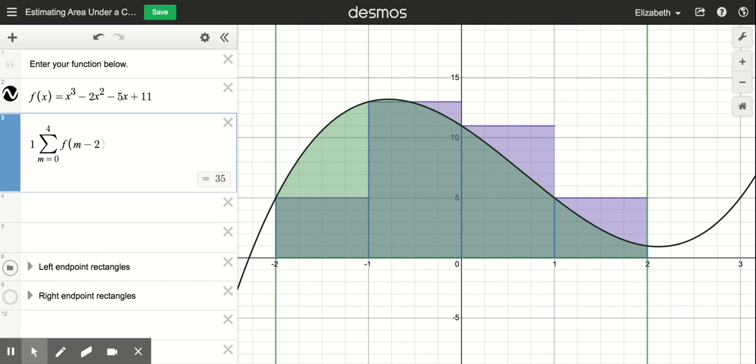So if I plug in my left endpoint rectangles, the expression that I just wrote is a summation. I can see that I go from zero to three, I started at negative two, that gives me the four rectangles. The area of those four rectangles is 34.